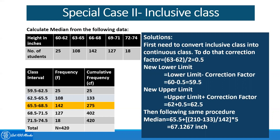After that, the procedure is the same as before. We first find the total frequency — in our case it is 420. Therefore, the n by 2 value will be 210. Next we calculate cumulative frequency by adding frequencies sequentially. The first CF is 25; next is 25 plus 108, which is 133; 133 plus 142 is 275; and we end up with 420, our total number of observations. So n by 2 is 210, and we look in the CF column for the value that crosses 210.